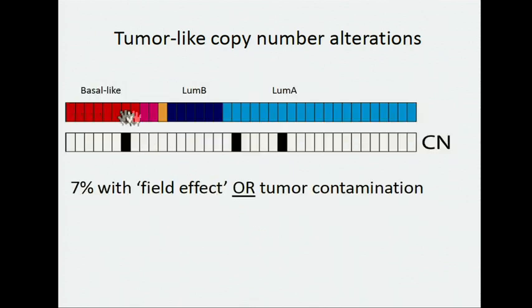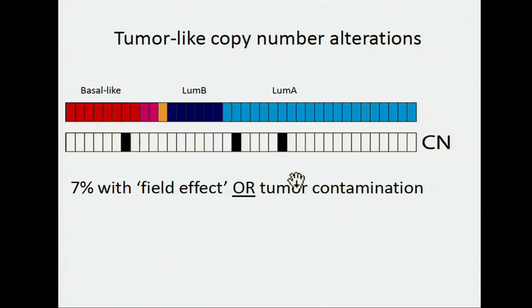Here is a map showing all 40 samples we analyzed, color coded by tumor subtype. The field effects seem to be occurring in all different types of tumors. We have a basal-like and two luminal A's that showed some sort of field effect or tumor contamination based on copy number data. In total, about 7 percent of the samples had evidence of some kind of copy number alteration in the adjacent normal.